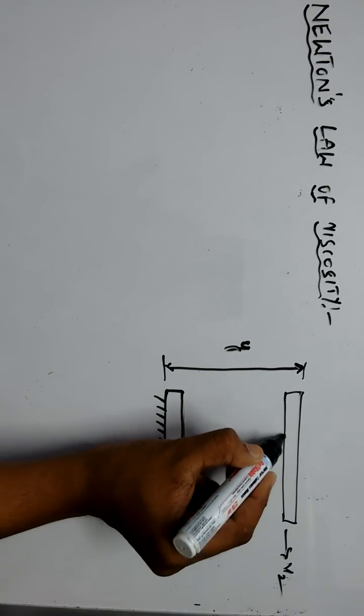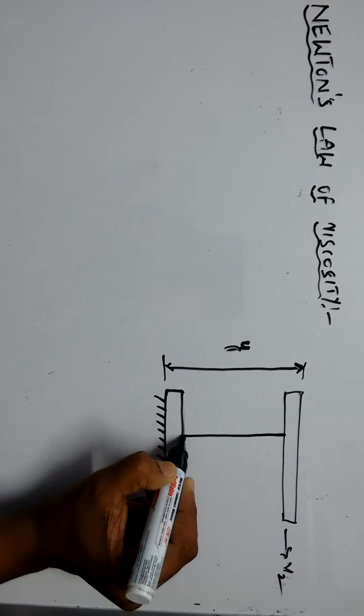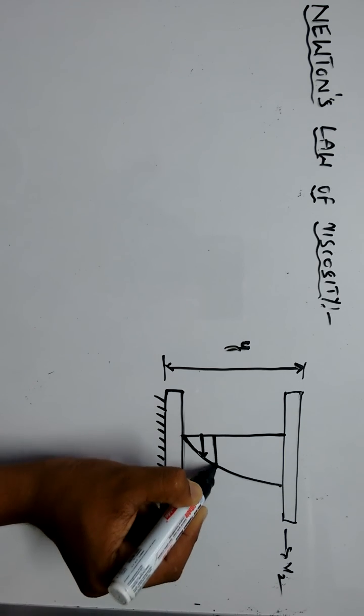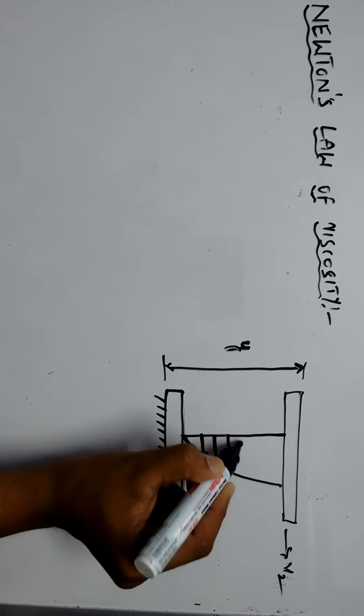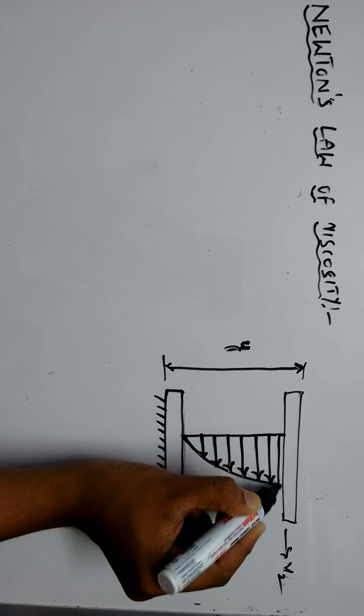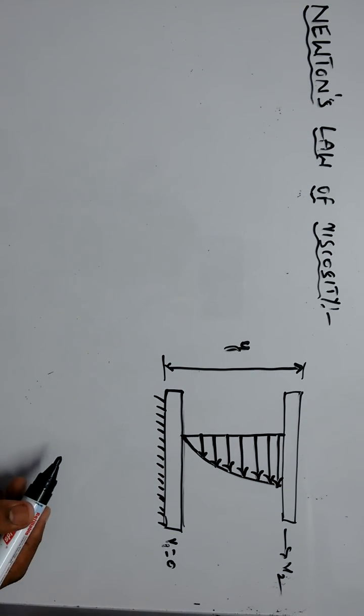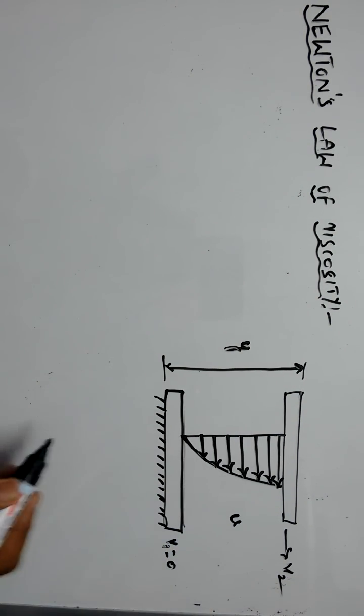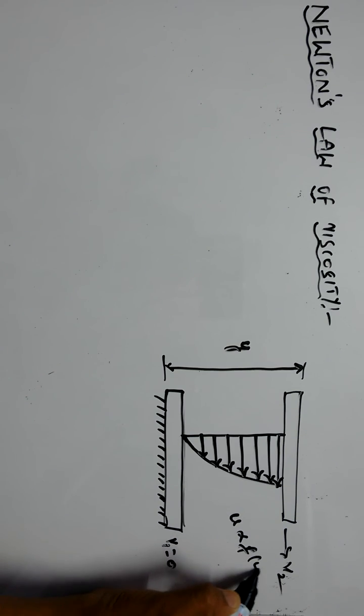The distribution of velocity of the fluid is like this. A number of fluid layers are moving in a horizontal plane which are parallel to each other. The velocity of these different layers varies with respect to distance y, or velocity is a function of distance.